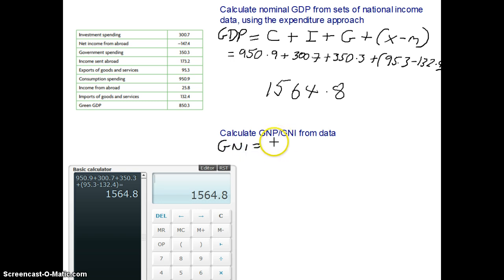It's our GNI equals GDP plus our income from abroad, so any, say from my point of view, British people who live abroad when they send income home, so income from abroad, minus income sent abroad.